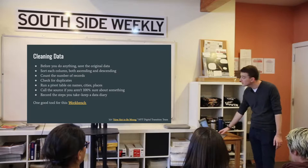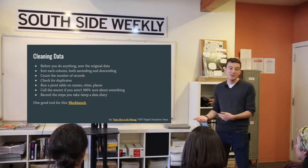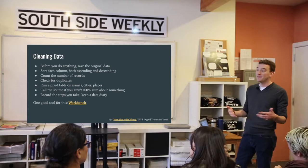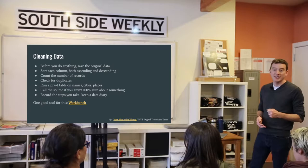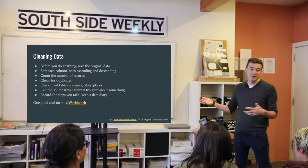Count the number of records. Make sure that you have the number of records that you think you have. If you have a data set that's supposedly about the 50 states, are there 50 rows to it? Maybe there's 51 because they include DC. Maybe there's 54 because they include the minor outlying islands and Puerto Rico. Make sure you have the number of records you're expecting to have.